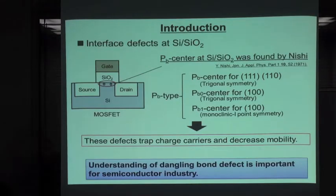This dangling bond defect is known as carrier trap centers, so they cause instability of device performance, such as reduction of mobility. The understanding of dangling bond defect is important for semiconductor industry.